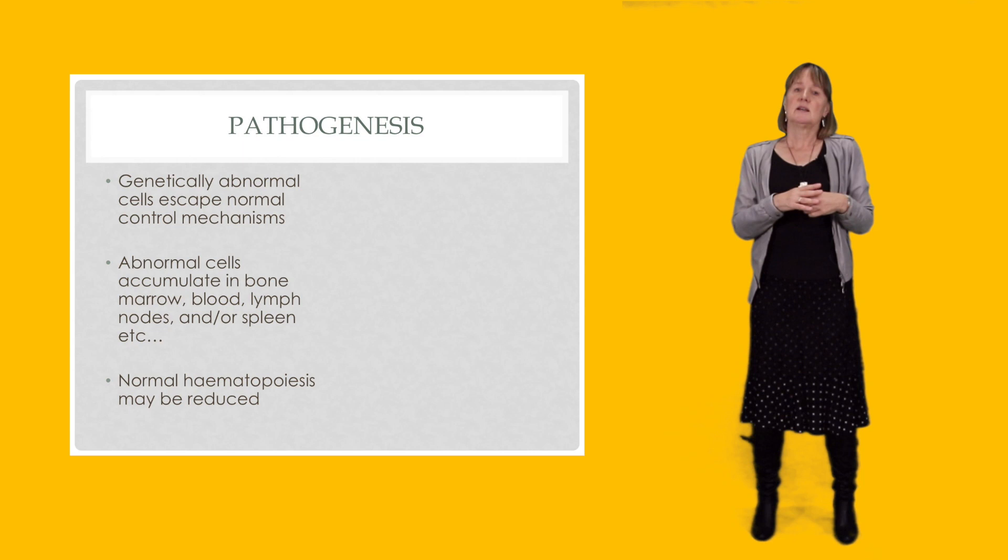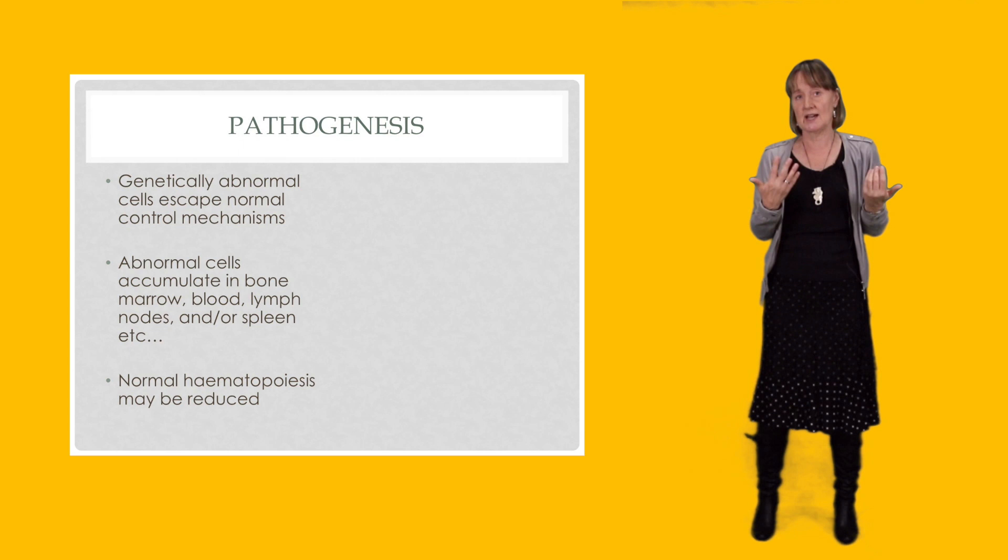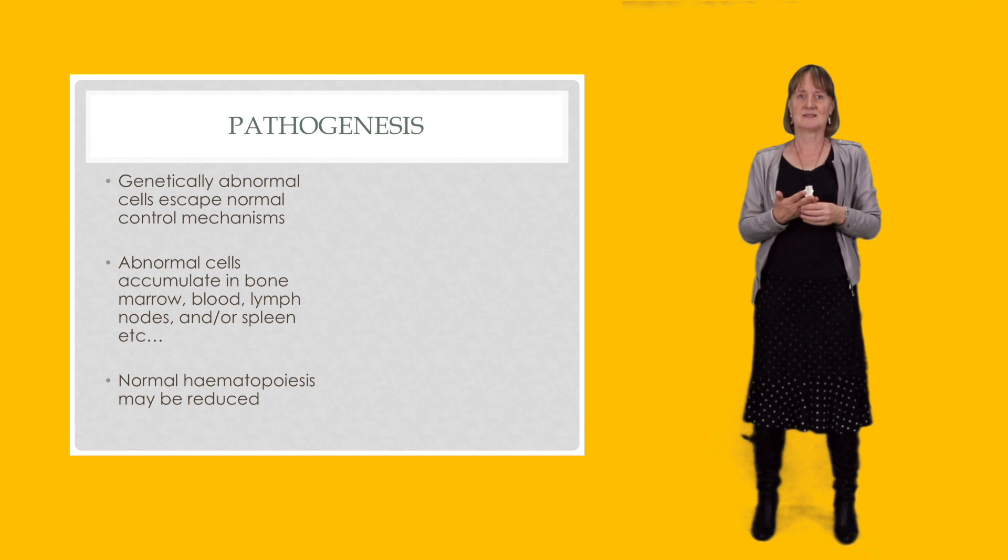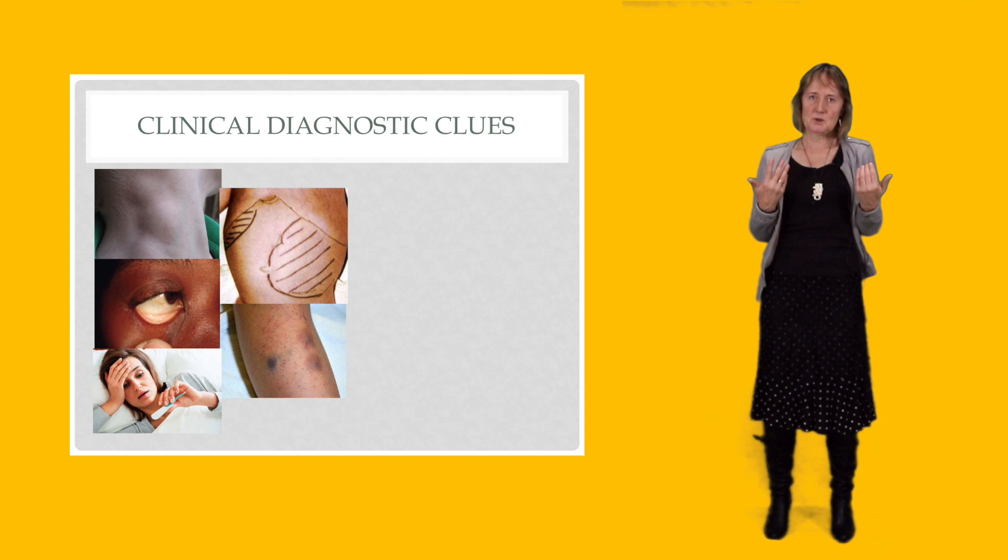But sometimes because these cells are abnormal, they also accumulate in other tissues. When we see an accumulation of the abnormal cells in the bone marrow, that often interferes with the production of the normal blood cells. So alongside the expansion of the abnormal cells, we often see a reduction in the normal cells.